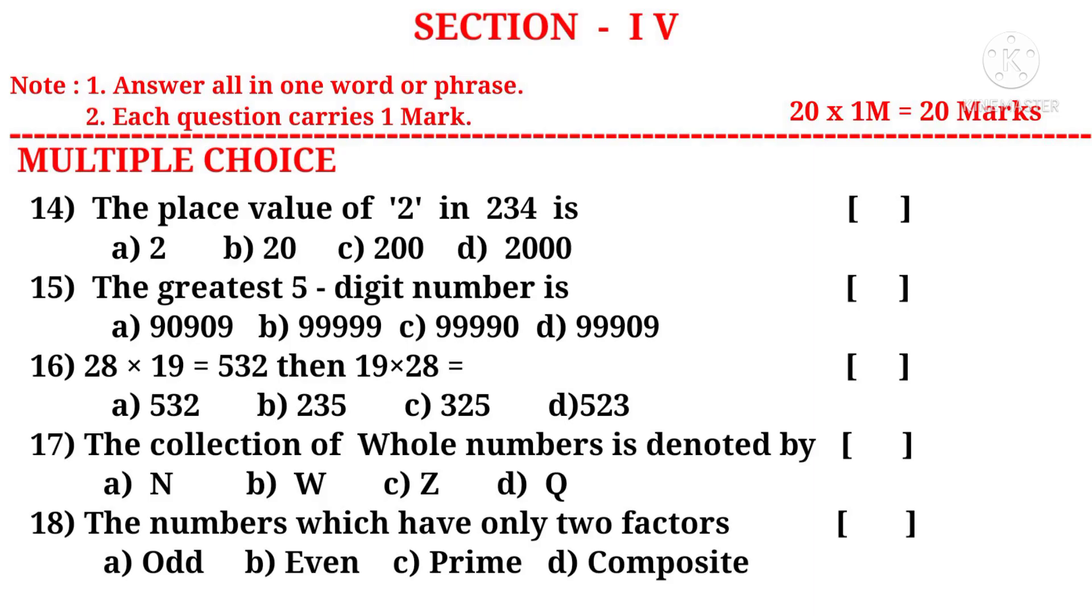Multiple choice. Fourteenth question: The place value of 2 in 234 is. Observe that 2 is in hundreds place. So its place value is 2 into 100, that is equal to 200. So the correct choice is C.